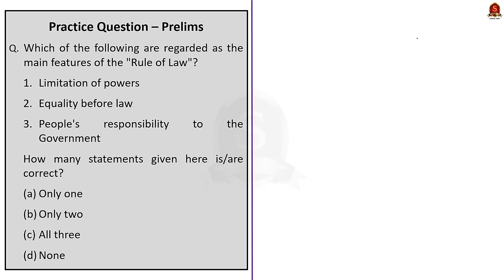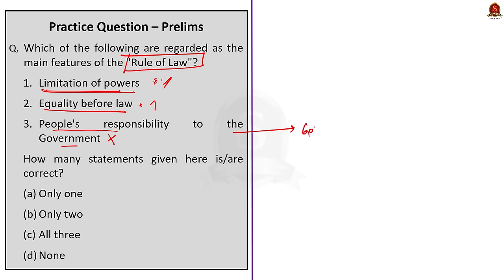Question 1: Which of the following is regarded as the main features of the rule of law? Statement 1: limitations of power — as we know from our discussion, this is one of the important features of rule of law, so this is correct. Statement 2: equality before law — this also comes under the ambit of rule of law, so this is correct. Statement 3: people's responsibility to the government — this is incorrect because it is the government that is responsible to the people under the main features of rule of law. So the third statement is wrong and the correct option is option B.